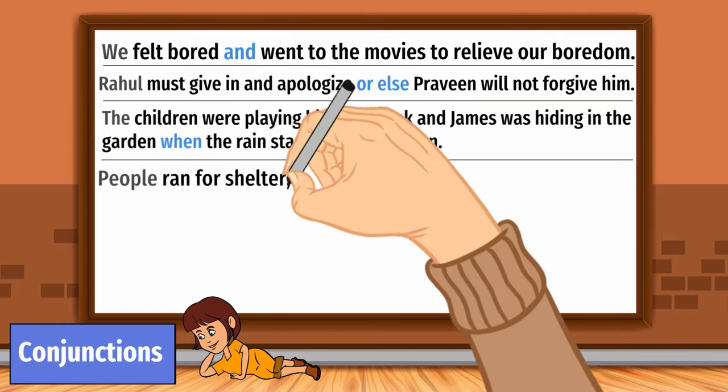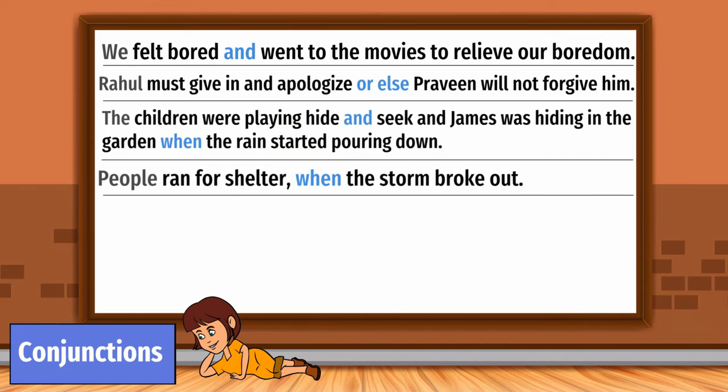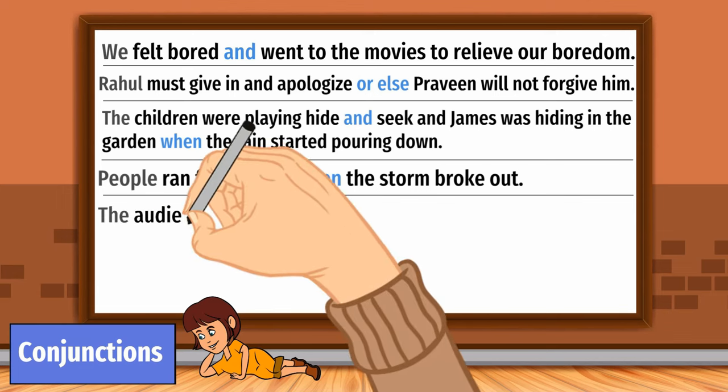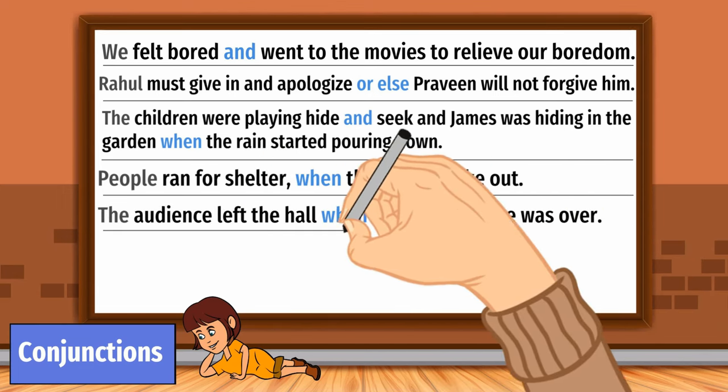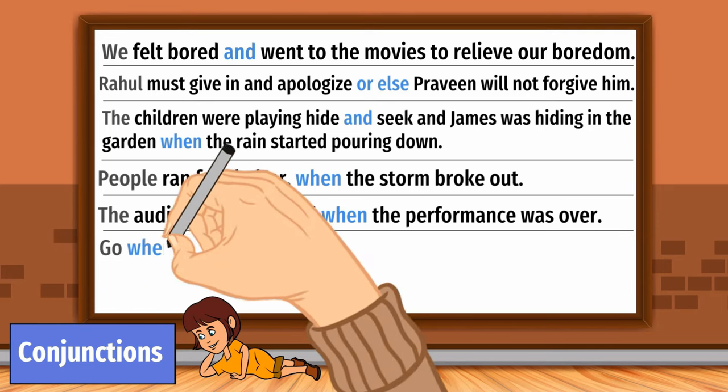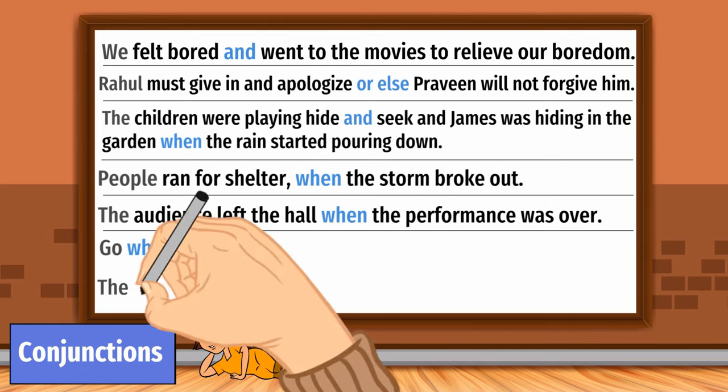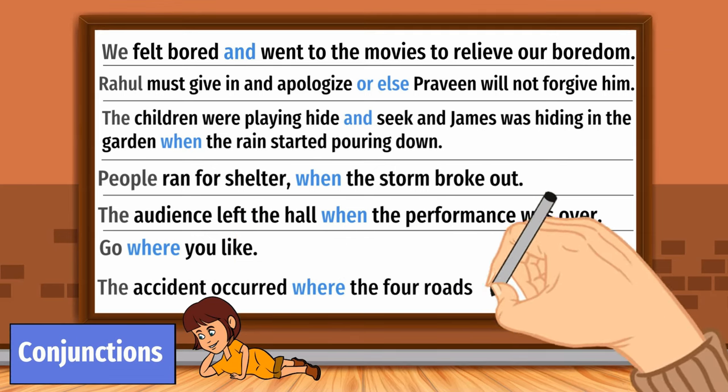People ran for shelter when the storm broke out. The audience left the hall when the performance was over. Go where you like. The accident occurred where the four roads meet.